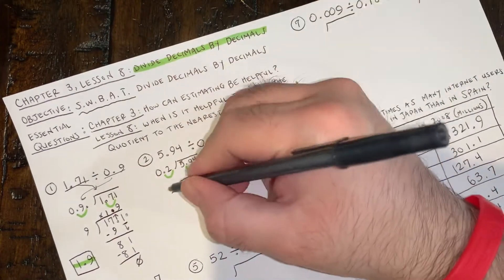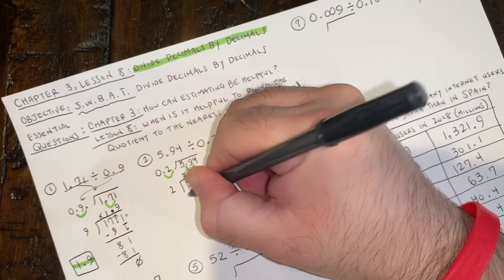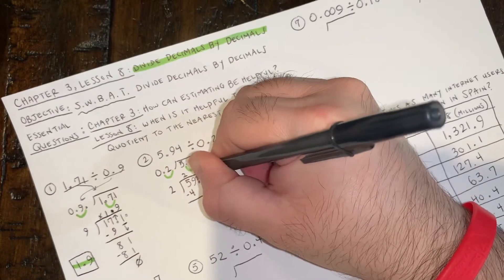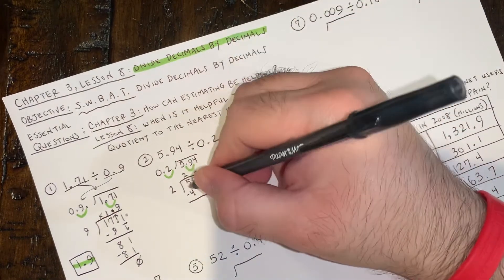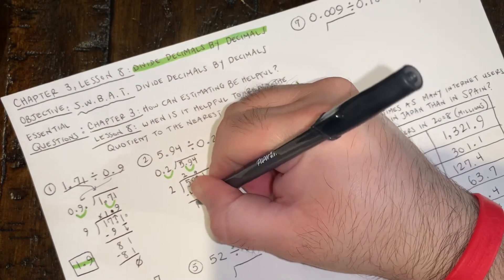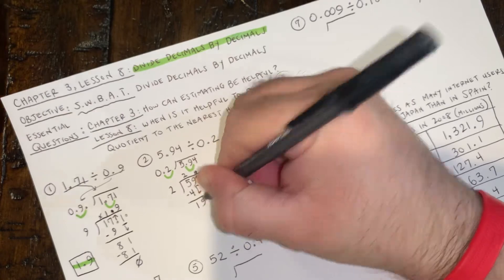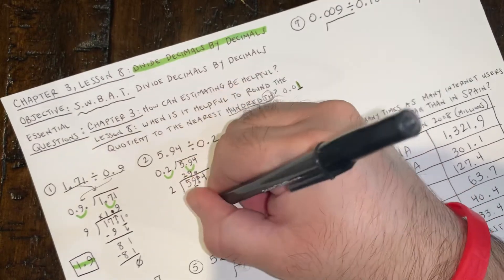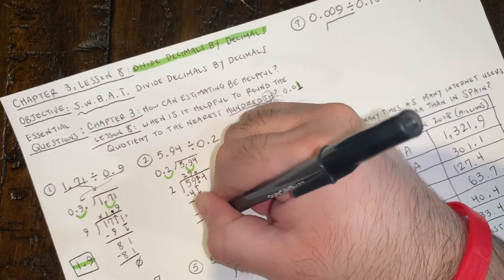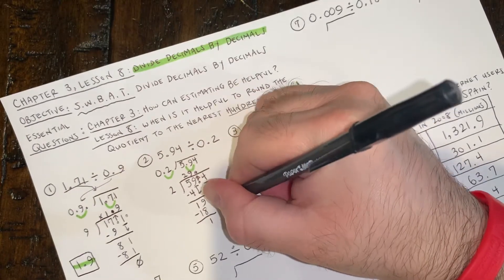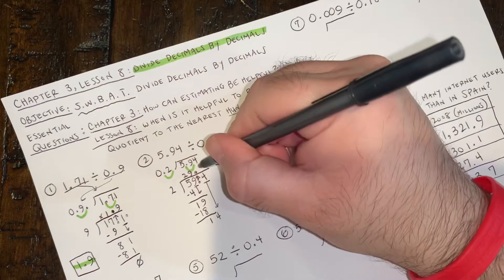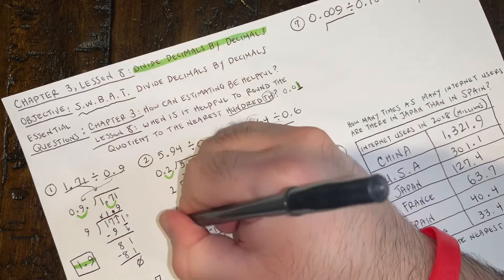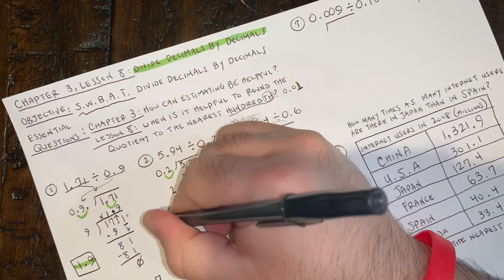If you moved it once on the outside, move it once on the inside — that becomes 59.4. Now divide: 2 goes into 5 two times. Don't forget to slide your decimal up. 2 times 2 is 4; subtract gives 1. Bring down the 9. 2 goes into 9 — actually 9 times. Subtract, gives 1. Bring down the 4. 2 goes into 14 seven times, and that's 14. It terminated, so your answer is 29.7.